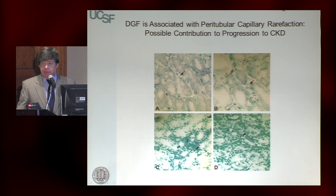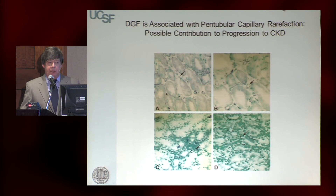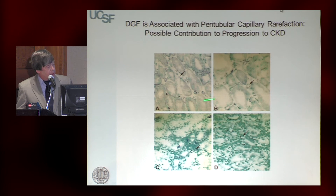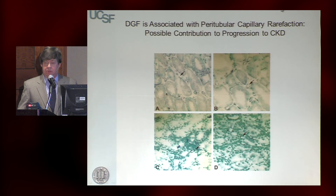I talked about loss of peritubular capillaries as a cause of progression. In a normal person, there are abundant peritubular capillaries around the kidney — important because tubular epithelial cells have the highest oxygen requirement other than the heart and forebrain, due to all the transport activity. In a typical case of delayed graft function, peritubular capillaries drop out by at least half. This kidney will likely have a very poor prognosis for one-to-two-year graft survival due to progression to CKD.